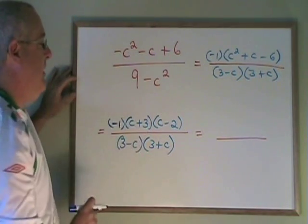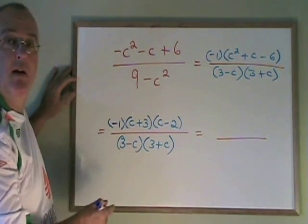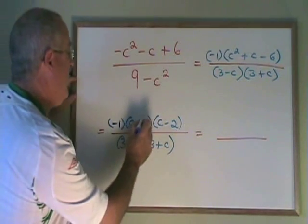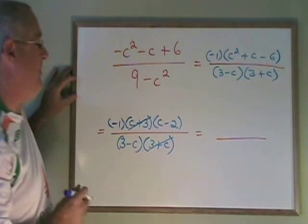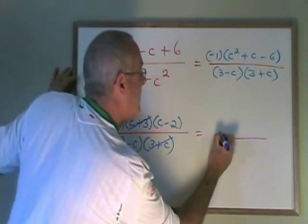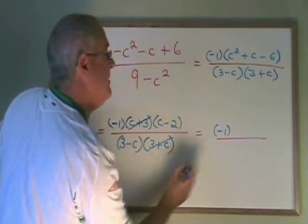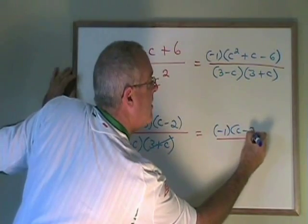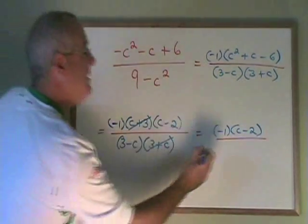The c plus 3 and the 3 plus c are the same and can therefore be cancelled. So I cancel 1 from the top, 1 from the bottom. I am left with negative 1, c minus 2 on the top and 3 minus c on the bottom.